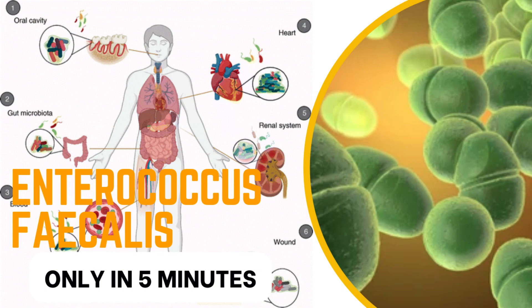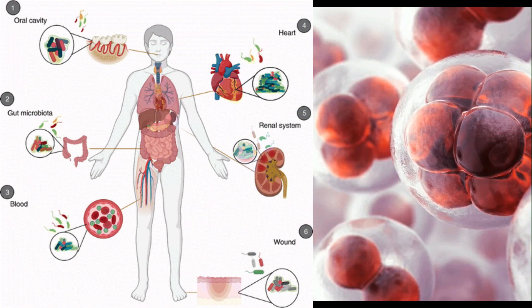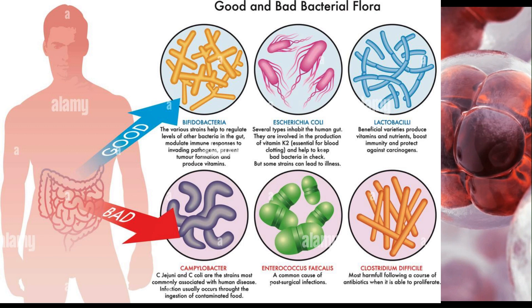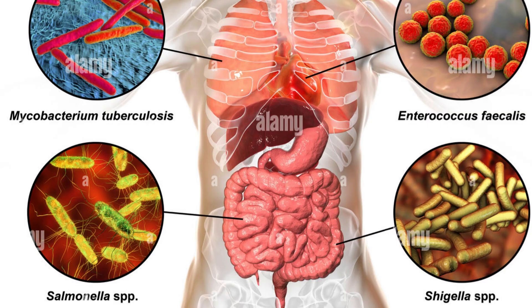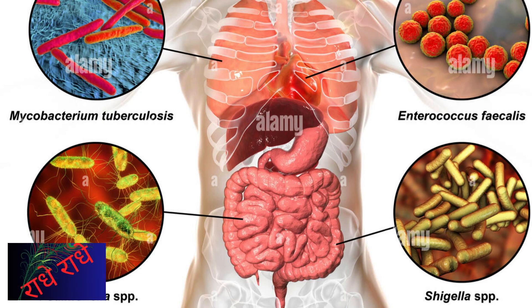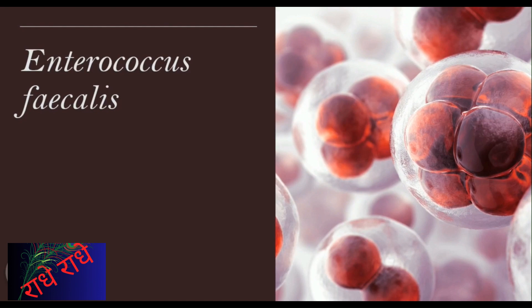Good morning everyone. Today we are discussing Enterococcus faecalis, a species of gram-positive bacteria which can be found in the human and animal gastrointestinal tracts. We will explore this bacteria and the potential for causing a variety of infections, as well as its well-known ability to develop antibiotic resistance. Let's get started.